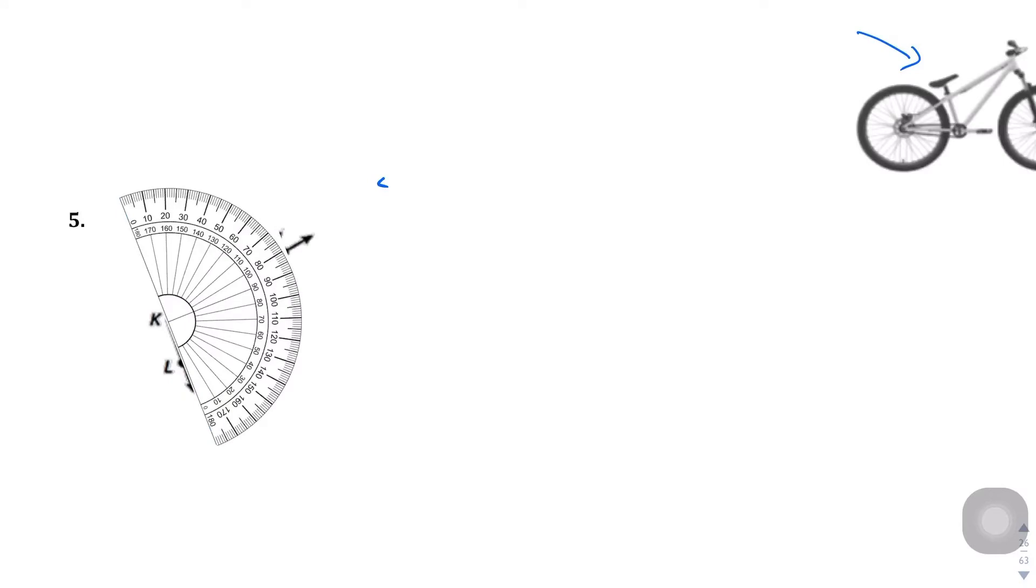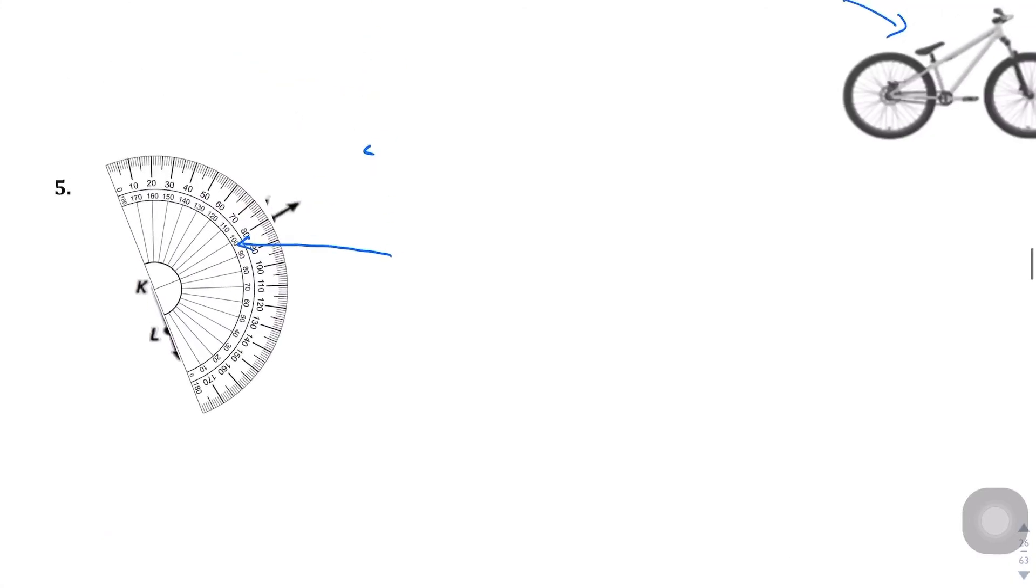You'll see that this line here is gonna be right about here, right? 100 degrees. We know that it's 100 degrees because it's past 90 and got into this line right here. So, we're gonna say about 100 degrees there. We'll be right back here.